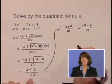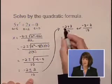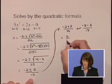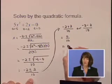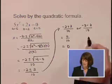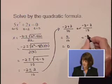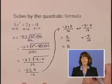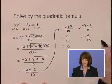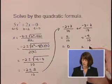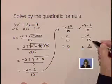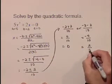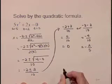Let's simplify each. Negative 2 plus 2 is 0. Divided by 10 is 0. Negative 2 minus 2 is negative 4 over 10. Let's reduce this. 2 goes into 4 twice. 2 goes into 10 five times. Don't lose your negative sign.